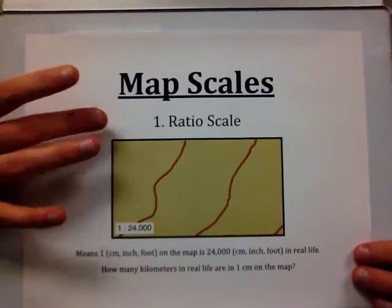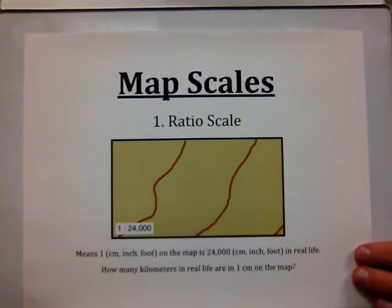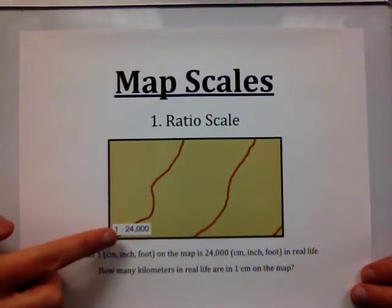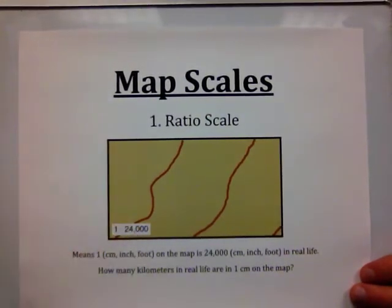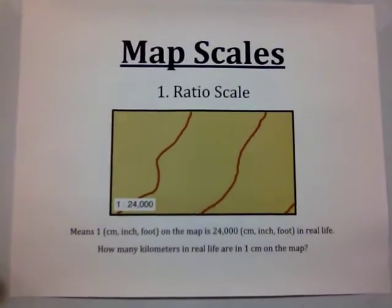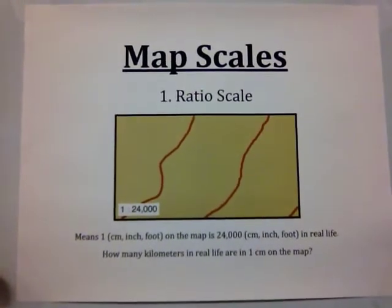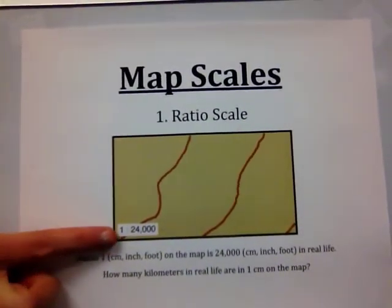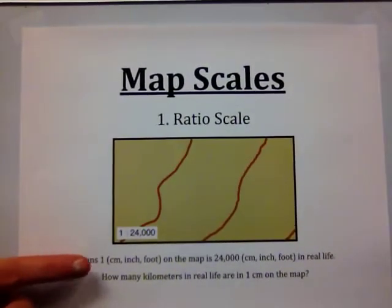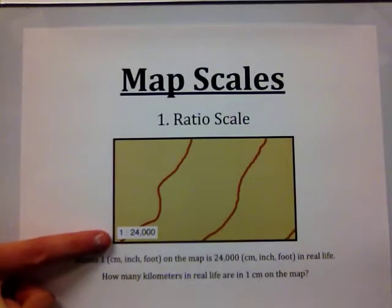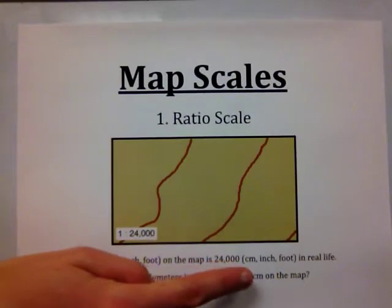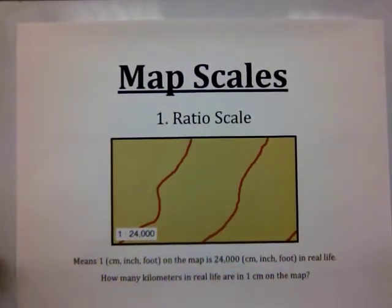We have what is known as a ratio or fractional scale. You will always see these on maps as one colon and then a number. For this case, we have 24,000 — a very common ratio of scale to have on a map, 1 to 24,000. What it means is that on the side where the 1 is, we are looking at on the map: 1 centimeter, 1 inch, 1 foot — whatever you're measuring with your ruler on the map — is equal to 24,000 of that same unit in real life.